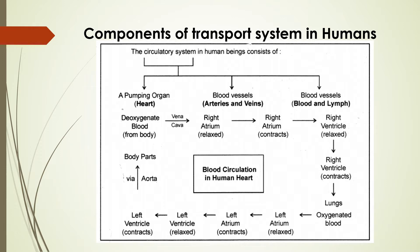So if we want to know the circulatory system in human beings, we should know the components of the circulatory system — how every cell is taking the oxygen, how they are taking the nutrients, by what pathway it is coming to every cell. For that there is a coordination of different organs, and those organs together make a system called the circulatory system. In human beings we can see in this chart that the circulatory system has a pumping organ that we call the heart, and blood and blood vessels — that is arteries and veins.